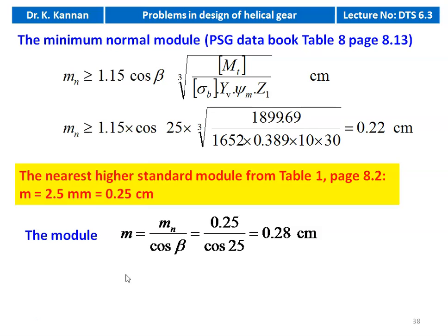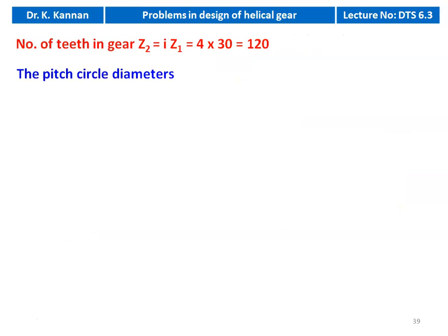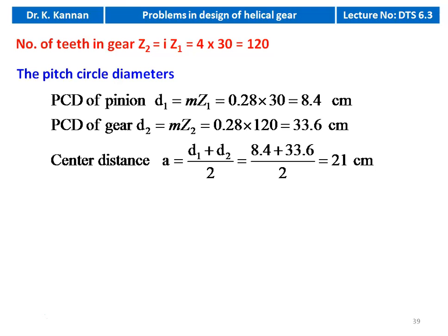Module m = mn / cosβ = 0.25 / cos25° = 0.28 cm. Axial pitch Pi = π × mn / sinβ = 3.14 × 0.25 / sin25° = 1.86 cm. Z1 = 30 (given), Z2 = i × Z1 = 4 × 30 = 120. PCD of pinion d1 = m × Z1 = 0.28 × 30 = 8.4 cm. PCD of gear d2 = m × Z2 = 0.28 × 120 = 33.6 cm. Centre distance A = (d1 + d2) / 2 = (8.4 + 33.6) / 2 = 21 cm.